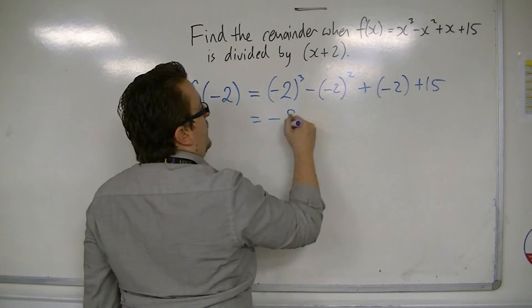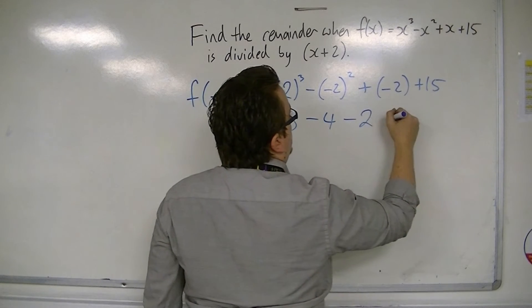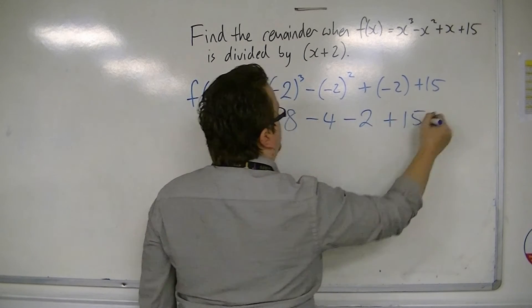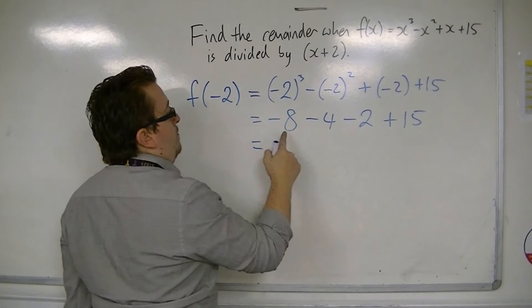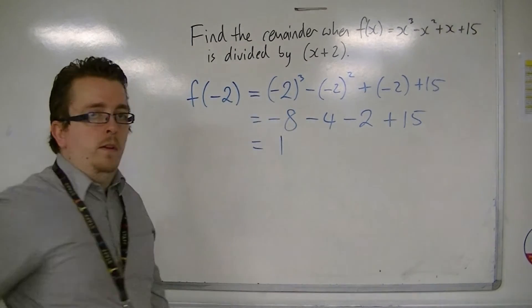So we have minus 8, take away 4, take away 2, plus 15. So minus 8, minus 12, minus 14, plus 15 is 1.